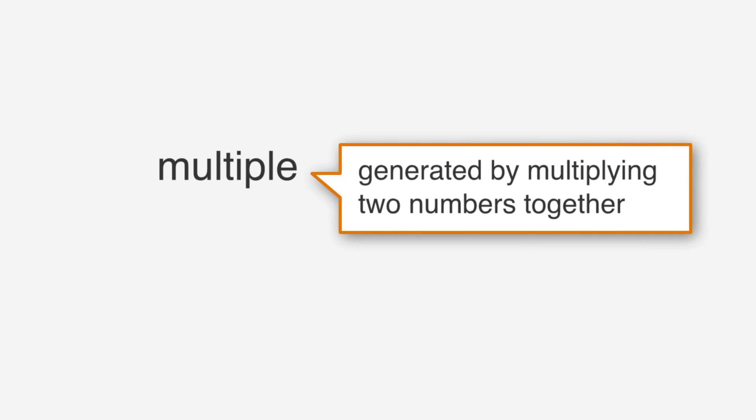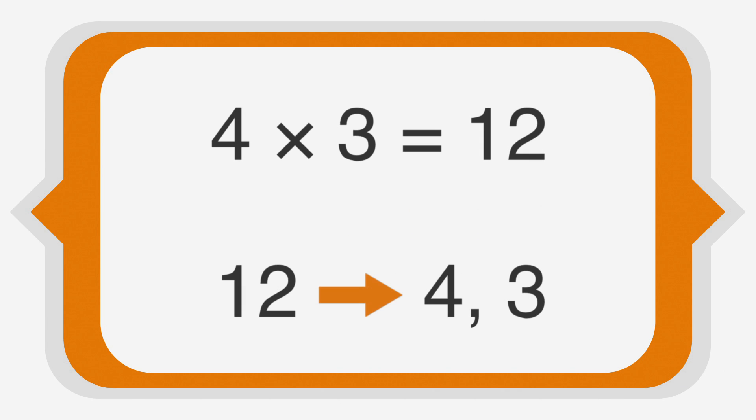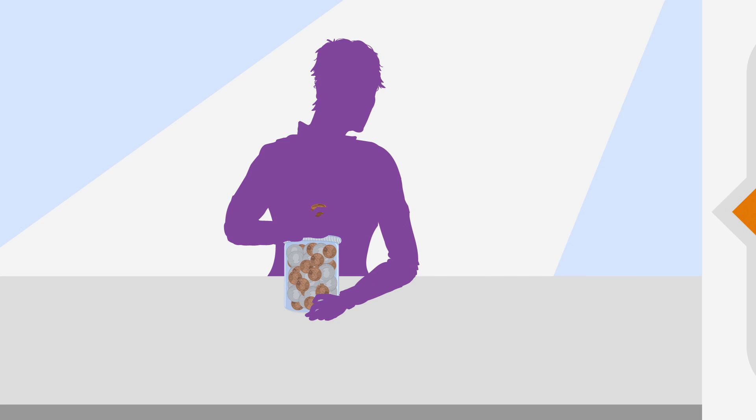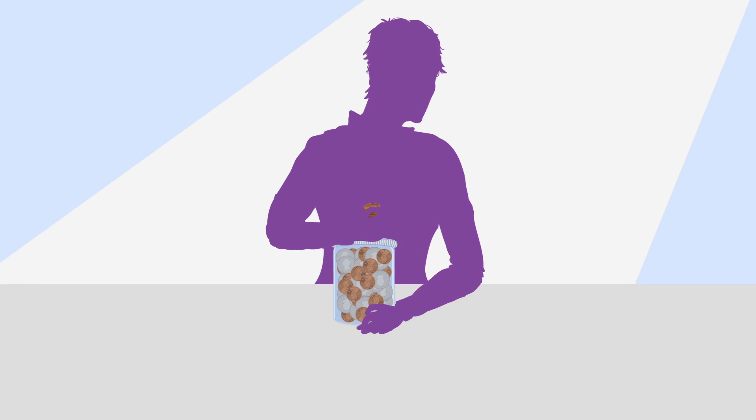As the name implies, multiples are generated by multiplying two numbers together. A multiple of a number is the product of that number times any integer. For example, 4 times 3 equals 12, so 12 is a multiple of both 4 and 3. You might already be using multiples to make your job easier whenever you count up the change in your change jar.